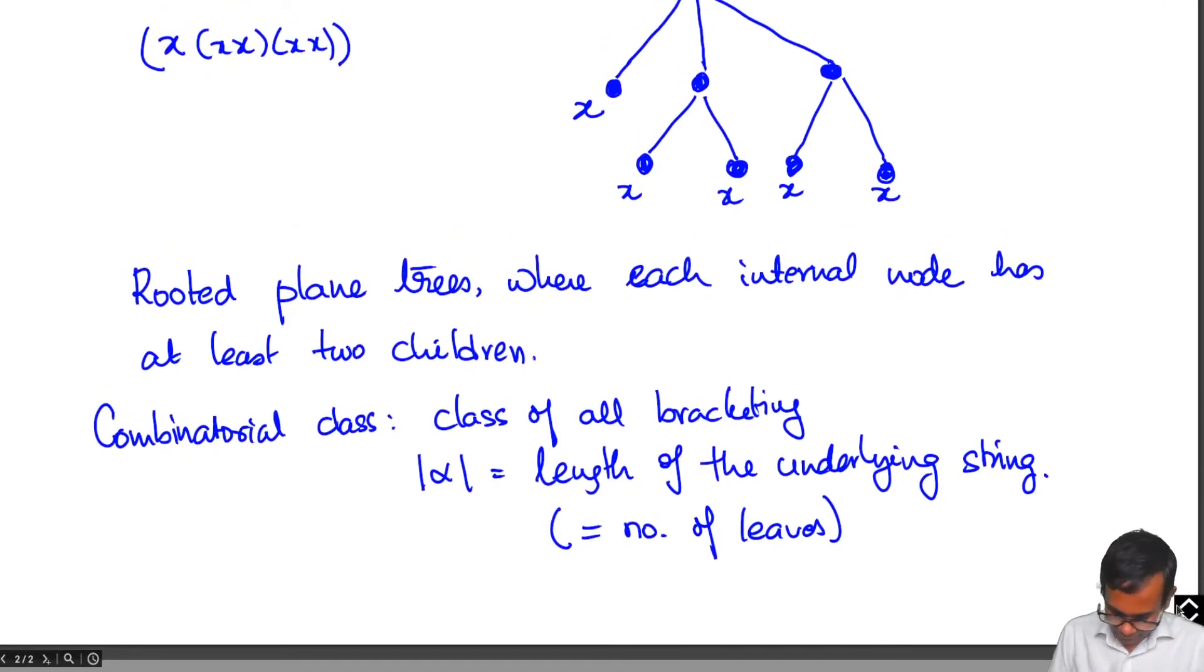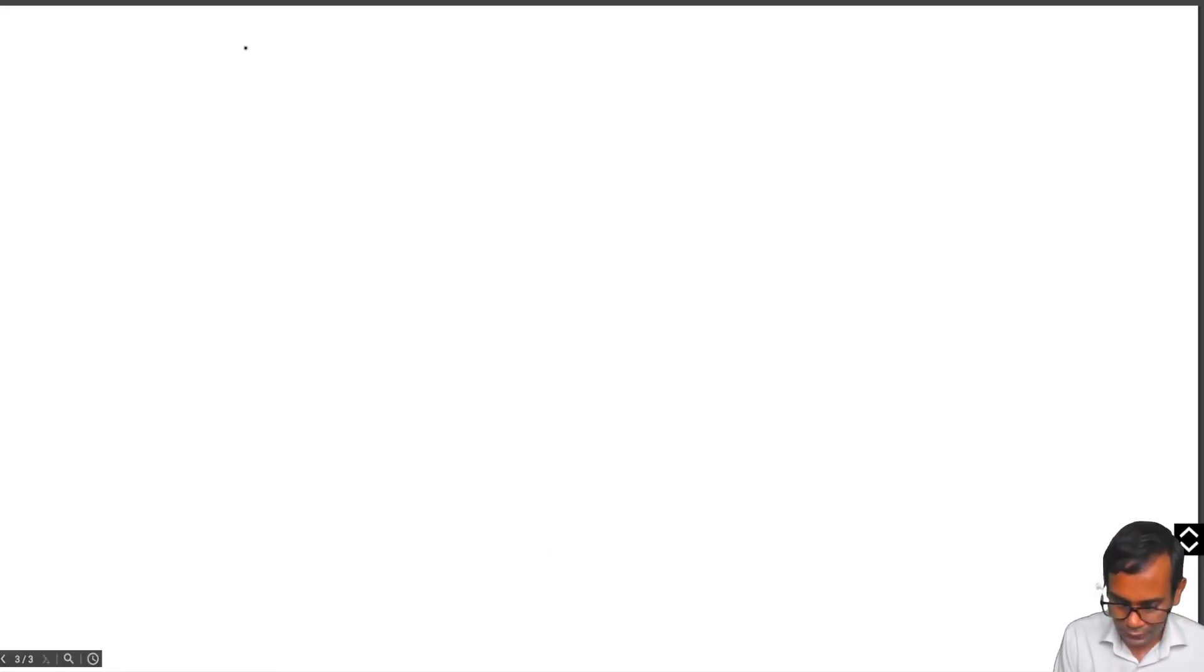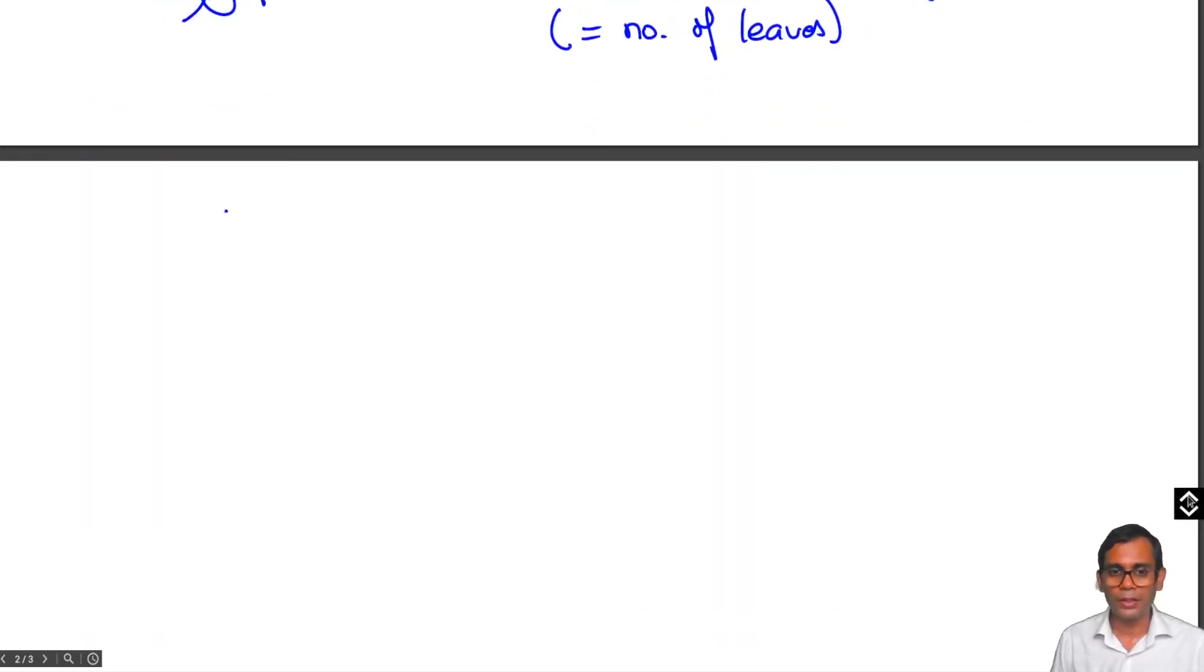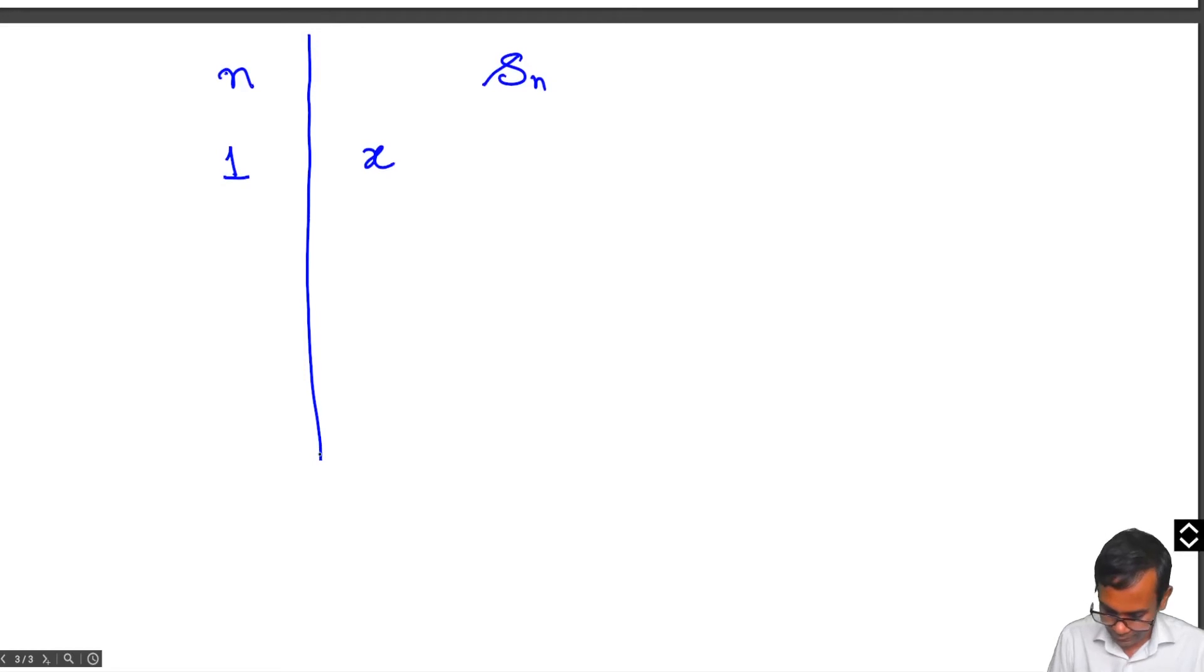Let us look at some examples. Let us call this class S, the class of all bracketings. Now for small values of n, what are the elements in S_n? If n is 1, there is only one bracketing of one symbol, just x. If n is 2, there is just one bracketing because you just have to put the two x's together and bracket them.